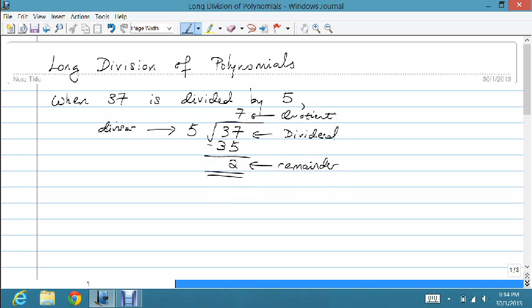So one way to express this would be the dividend equals the product of the divisor and the quotient plus the remainder. So this is the dividend, this is my divisor, this is my quotient, and my remainder.